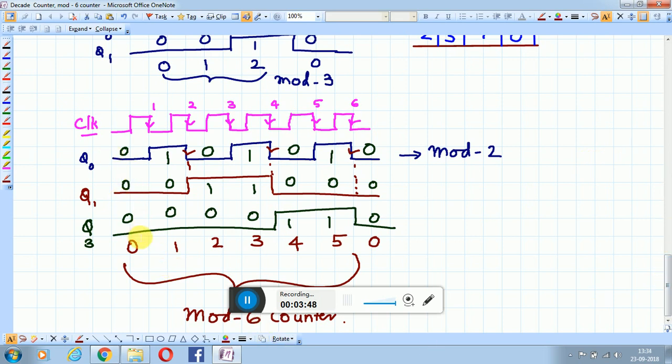We see 0, then 1, 2, 3, 4, 5, and back to 0. That means it is counting from 0 to 5, making it a mod-6 counter.